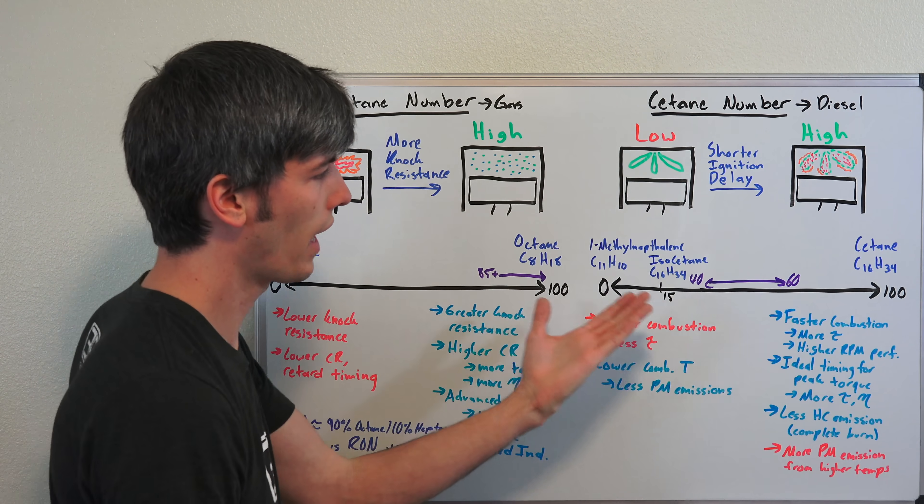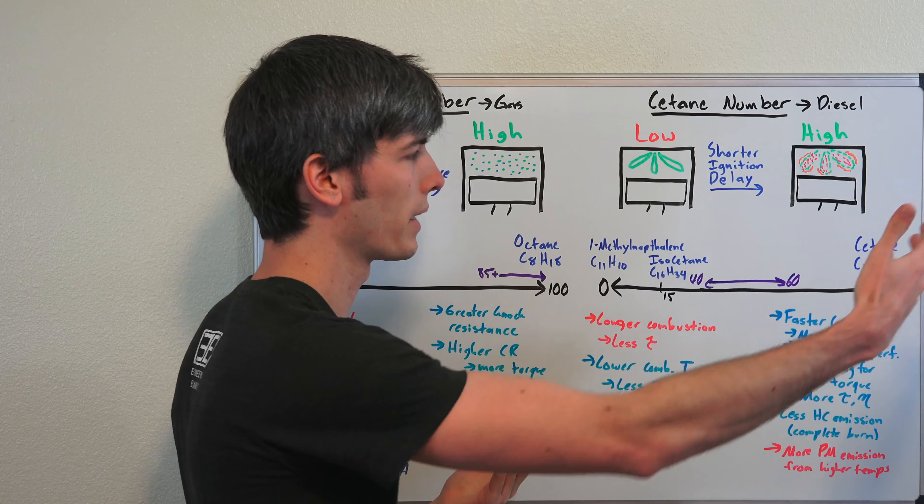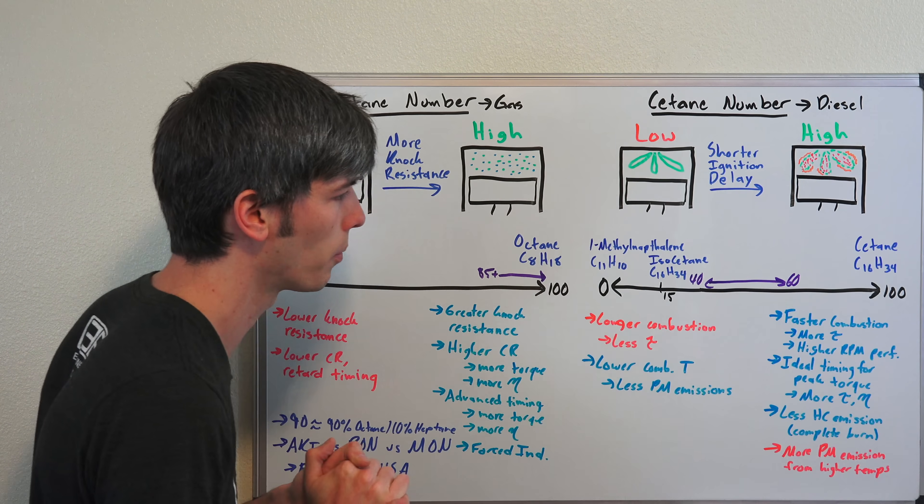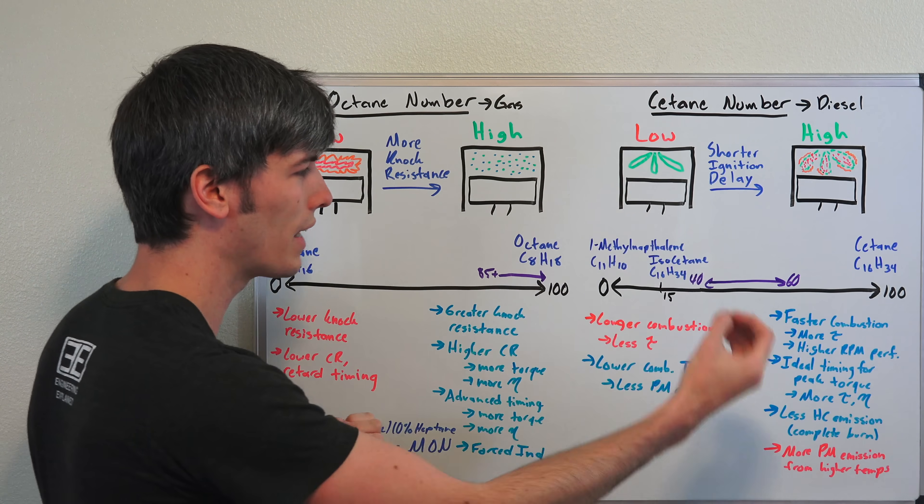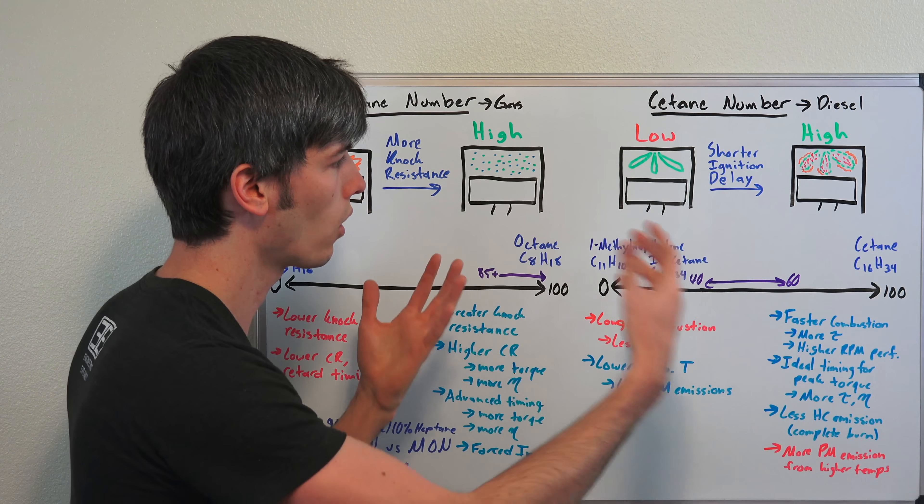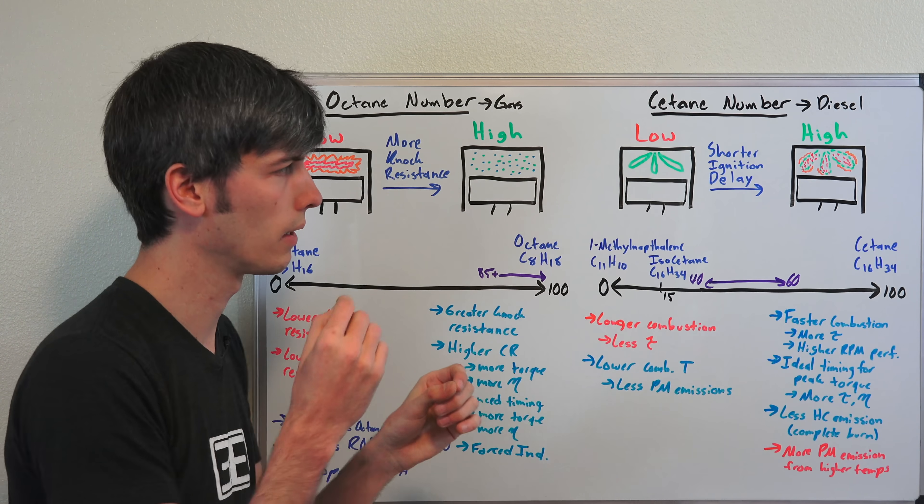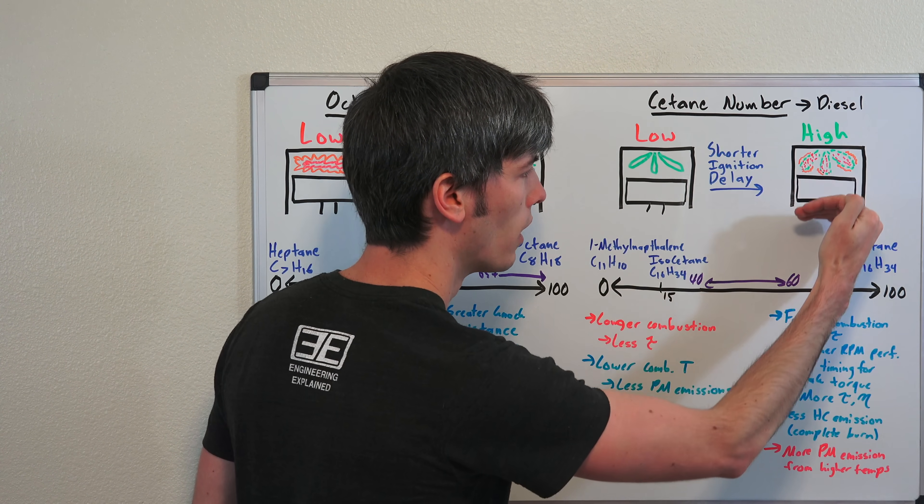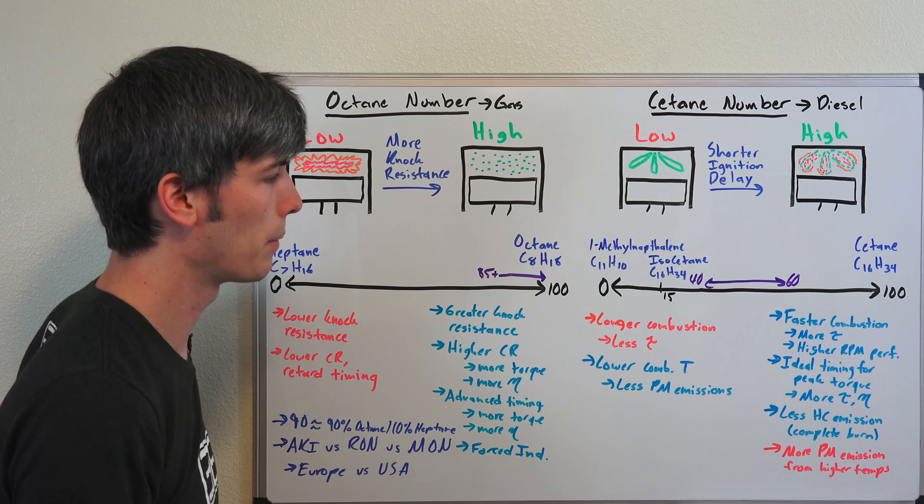The advantage of having that faster combustion is that you can create more torque and have engines performing at higher RPM because combustion doesn't take as long. It's also ideal for timing when peak torque occurs. By having quicker combustion and shorter ignition delay, you can time that more perfectly with when you want that peak torque to occur within the cylinder, so you have the maximum amount of work done.